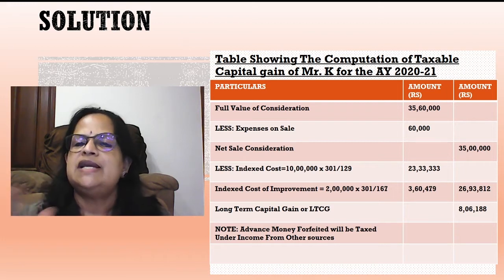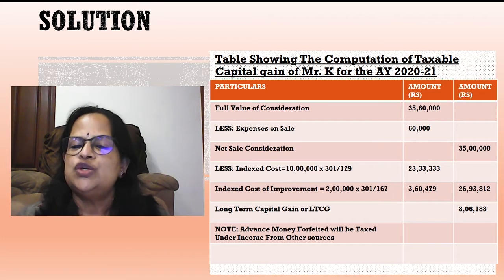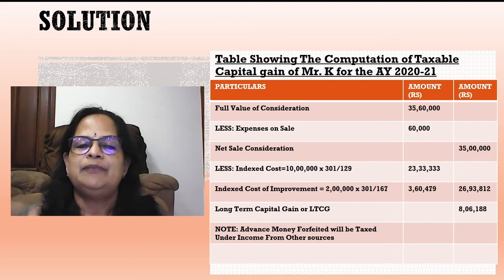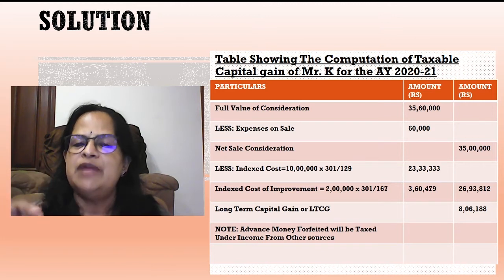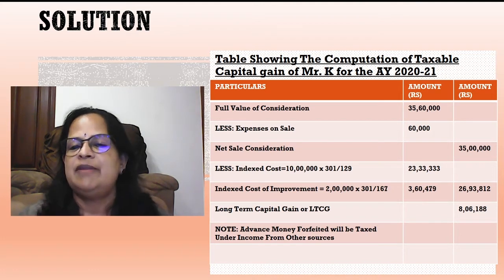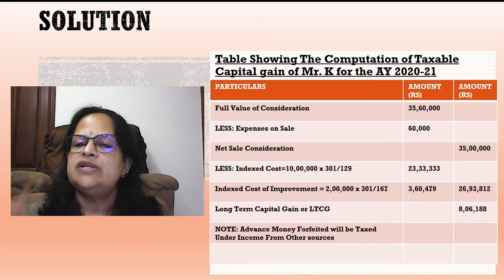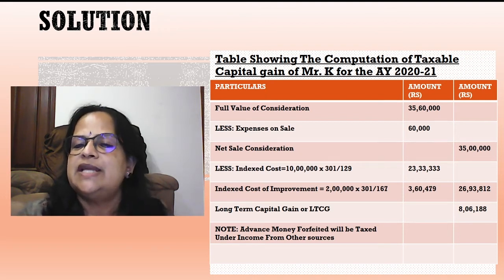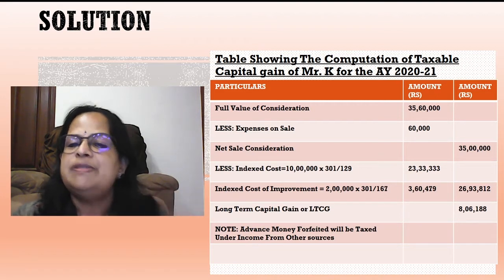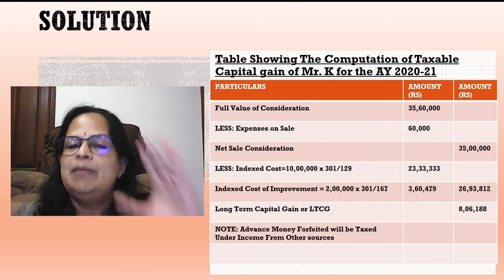Computation of taxable capital gain of Mr. K for Assessment Year 2021: Full value of consideration = ₹35,60,000; less expenses on sale ₹60,000; net sale consideration = ₹35,00,000. Less index cost of acquisition: ₹10,00,000 × 301 ÷ 129 = ₹23,33,333. Index cost of improvement: ₹2,00,000 × 301 ÷ 167 = ₹3,60,479. Total indexed deductions = ₹26,93,812.